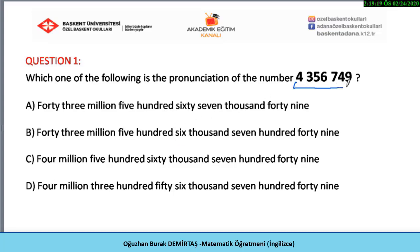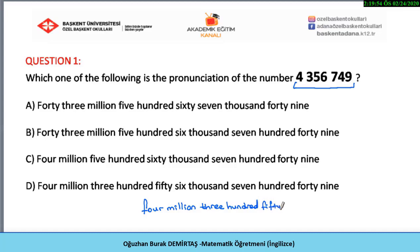Let's look at the number. We have four in the millions part, so it will be four million. Then we have three hundred fifty-six in the thousands part, so we have three hundred fifty-six thousand. And lastly, we have seven hundred forty-nine in the ones place, so the last part is seven hundred forty-nine.